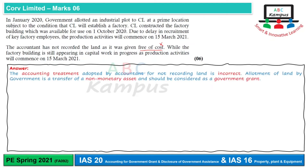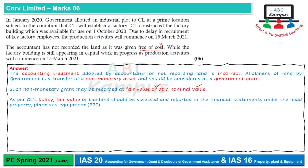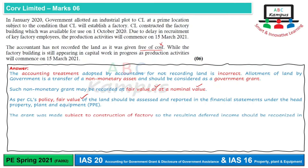A transfer of resource has occurred, so this should be considered a government grant. There are two measurement options: at fair value or at nominal value. Since CL's policy is fair value, the entry should be to debit land and credit deferred grant at the fair value of the land. Because the condition of the grant is construction of the factory, the deferred grant should be recognized as income over the useful life of the factory building.